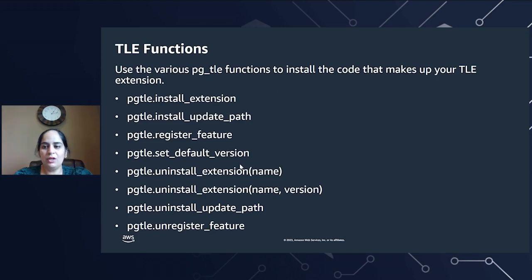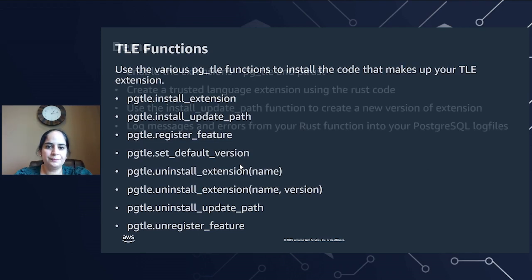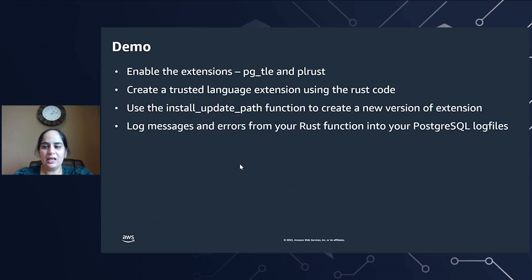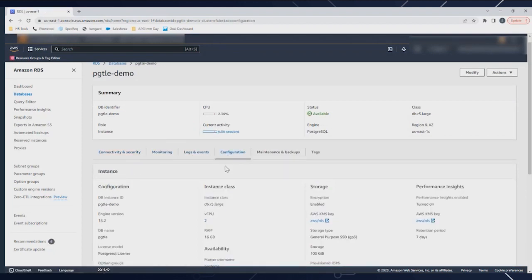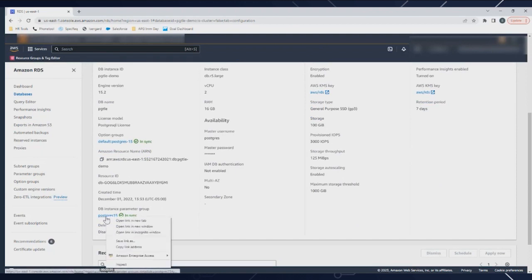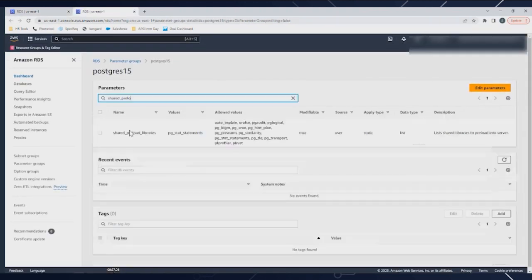Let's look at a quick demo on how you can start building with PL Rust on Amazon RDS. In this demo, we start with enabling the extensions PGTLE and PL Rust. Then we'll create a simple trusted language extension using Rust code. We'll use the TLE functions to update and create a new version of an extension. We'll also see how you can log messages and errors directly from your Rust functions in your PostgreSQL log files. I have the PGTLE demo database instance, which is RDS PostgreSQL 15.2. I go to the configuration tab, open the DB instance parameter group, and make changes to the shared preload libraries parameter.